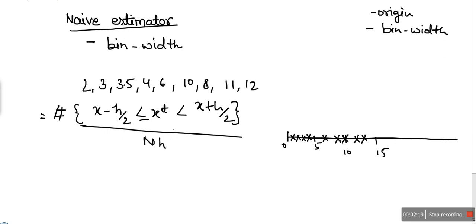The numerator is the number of data points. Here we have 2, 3, 3.5, 4, 6, 10, 8, 11, 12—a total of 9 data points. The value of N is 9. Out of these 9 data points, how many satisfy this condition? H is our bin width.